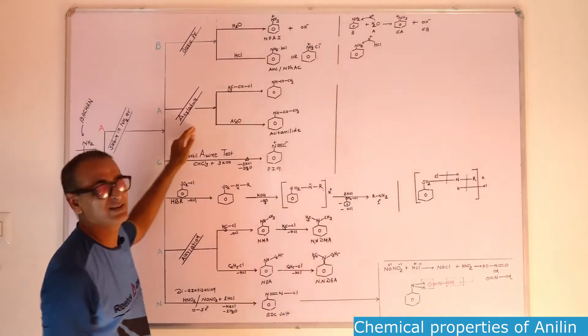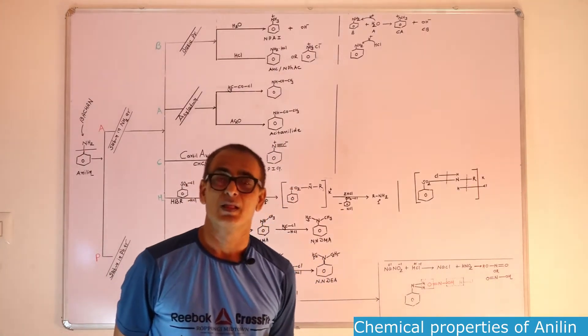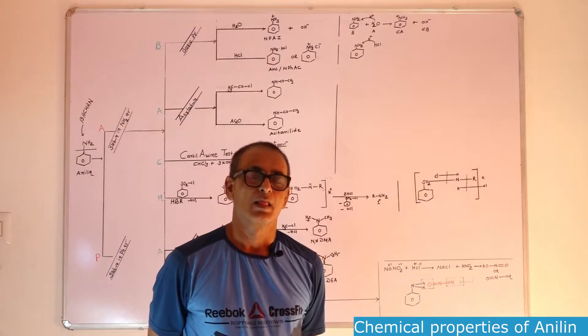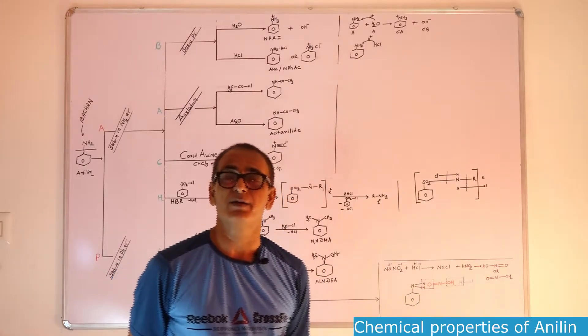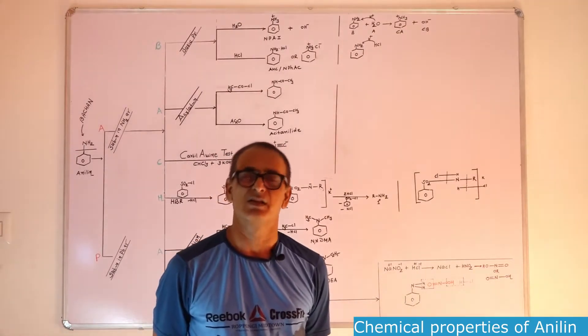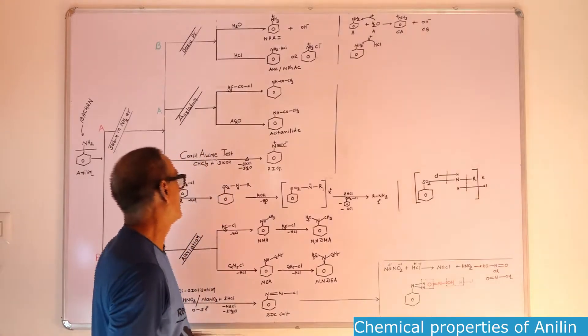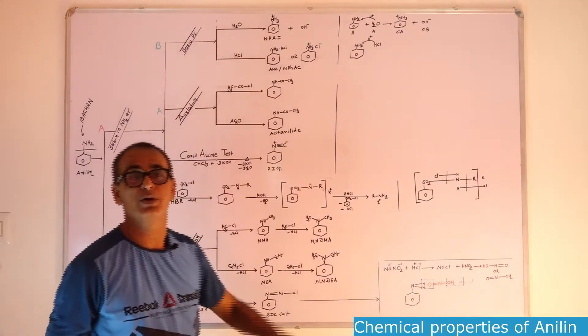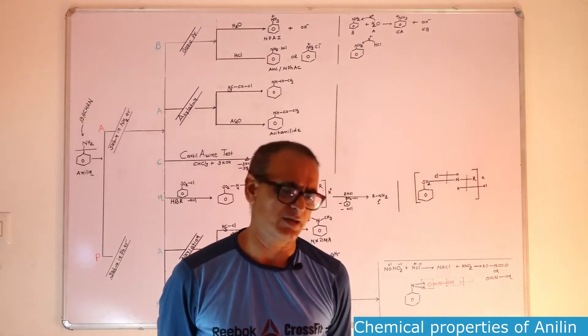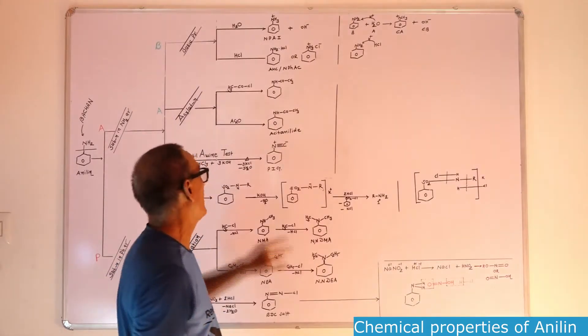Then second reaction is acylation. Acylation means introduction of acyl group. What is the source of acyl group? Acetic acid. After removal of one hydrogen atom from acetic acid, you will get acetate group. And after removal of OH group from acetic acid, you will get acyl group, otherwise you can say acetyl also. For acylation, there are two reagents used in organic chemistry. First one acyl chloride, and second one acetic anhydride.